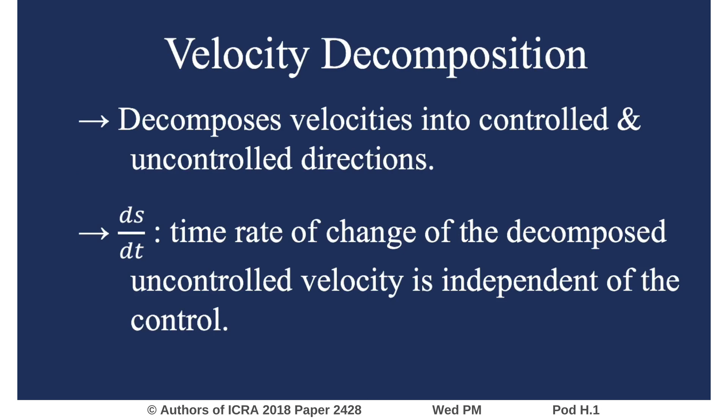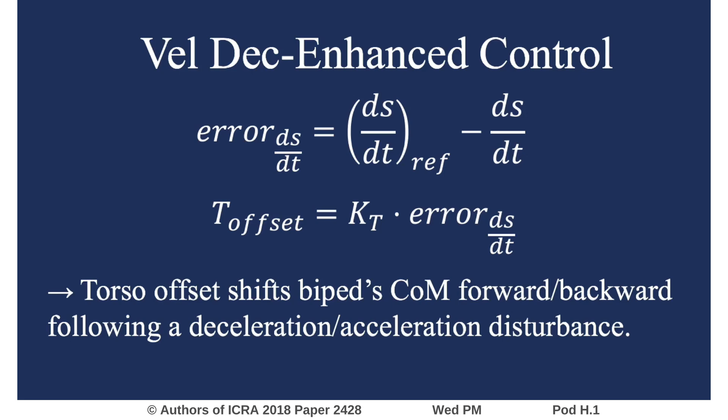The new framework decomposes the system's velocities into controlled and uncontrolled directions. DSDT, the time rate of change of the uncontrolled velocity, is independent of the control input, but provides information this work exploits to improve disturbance rejection performance. The error in DSDT is defined as the difference between the reference and actual signals.